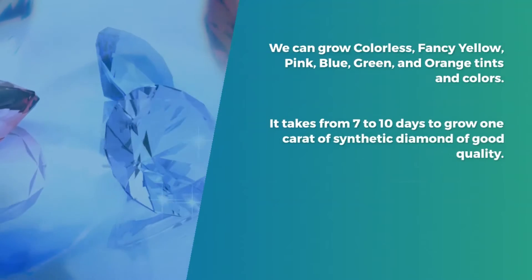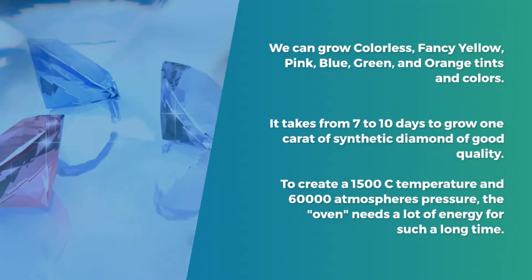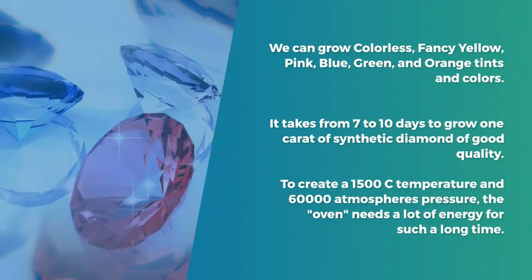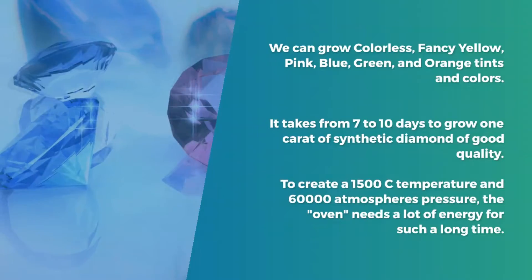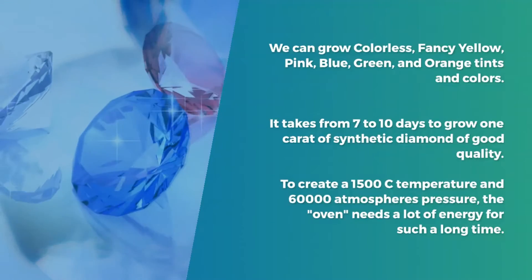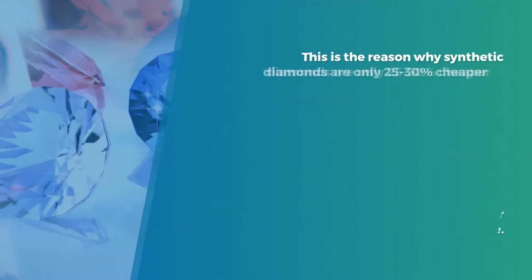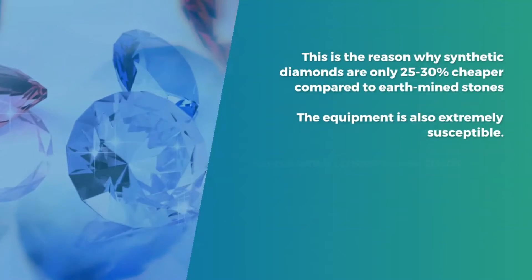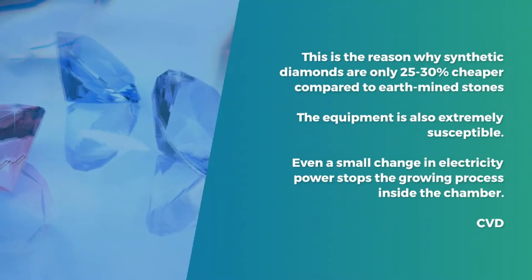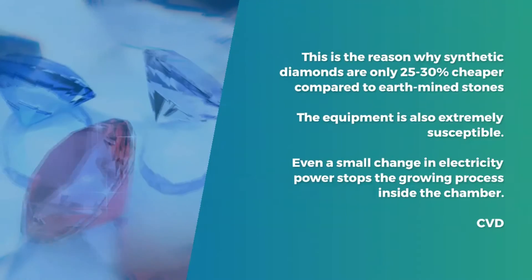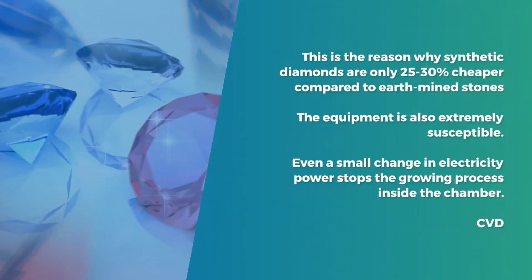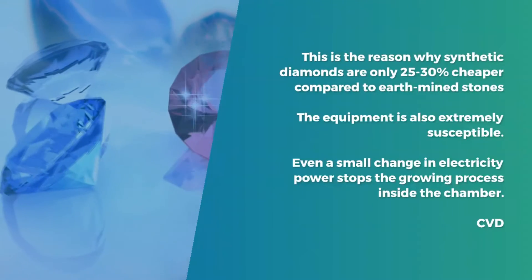It takes from seven to ten days to grow one carat of synthetic diamond of good quality. To create a 1500°C temperature and 60,000 atmospheres pressure, the oven needs a lot of energy for such a long time. This is the reason why synthetic diamonds are only 25 to 30 percent cheaper compared to earth-mined stones.